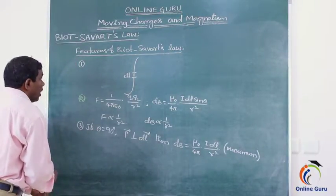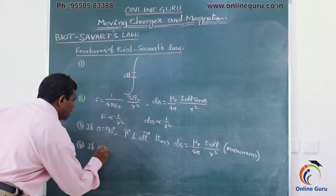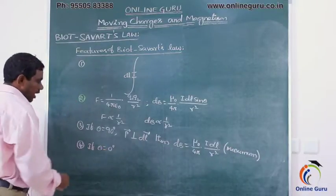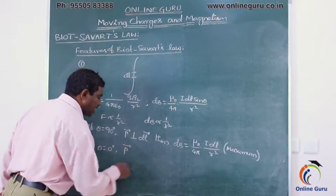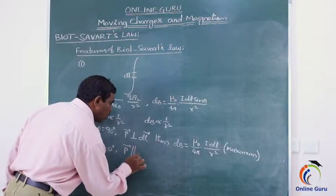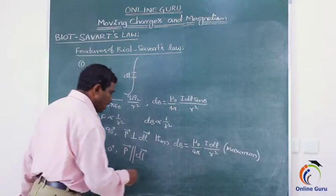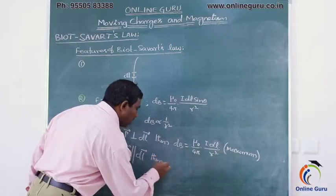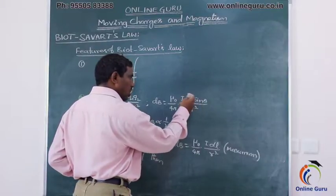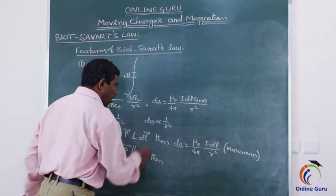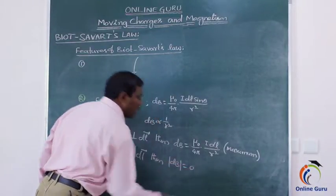The fourth important feature: if θ equals 0 degrees, the point where we calculate the magnetic induction is parallel to the current element dL. When parallel, substituting θ = 0° gives sin0° = 0, and 0 into anything becomes 0. Therefore, the magnitude of magnetic induction dB becomes zero when the point is parallel to the current element.